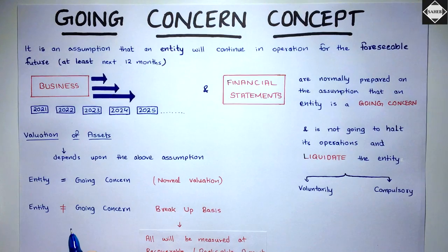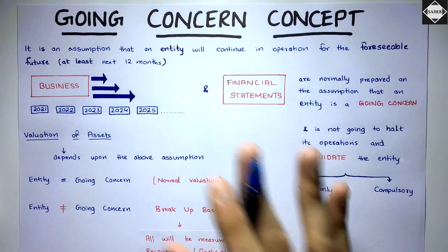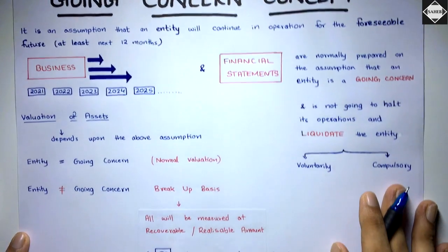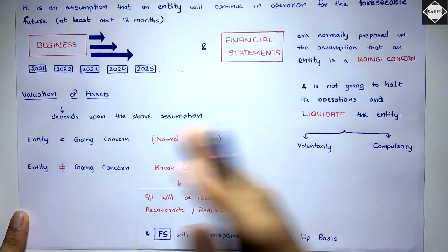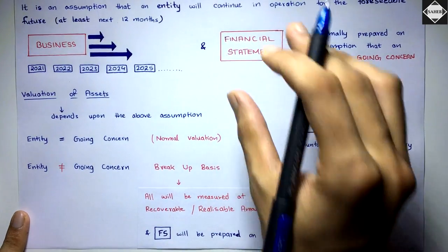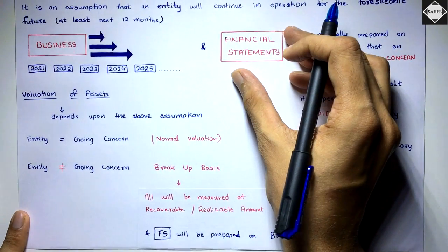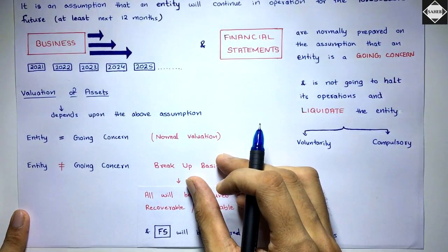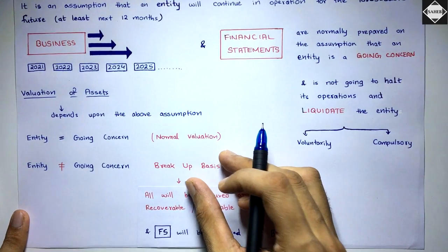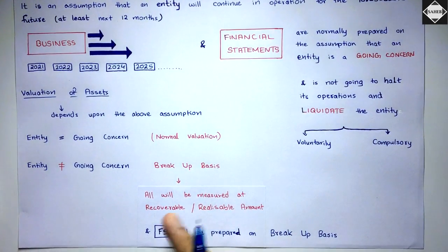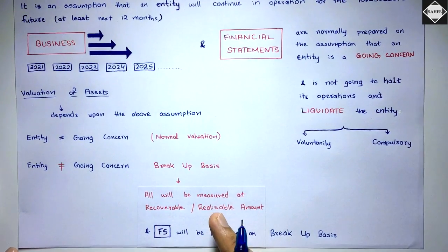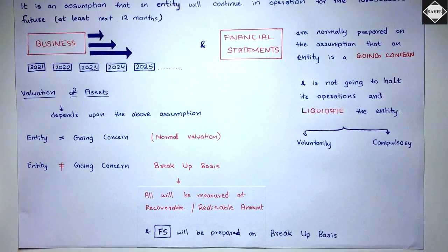If the entity is not a going concern — if it is going to be shut down or liquidated very soon — then the financial statements have to be prepared on a breakup basis. Breakup basis means all assets and everything will be measured at recoverable or realizable amounts.